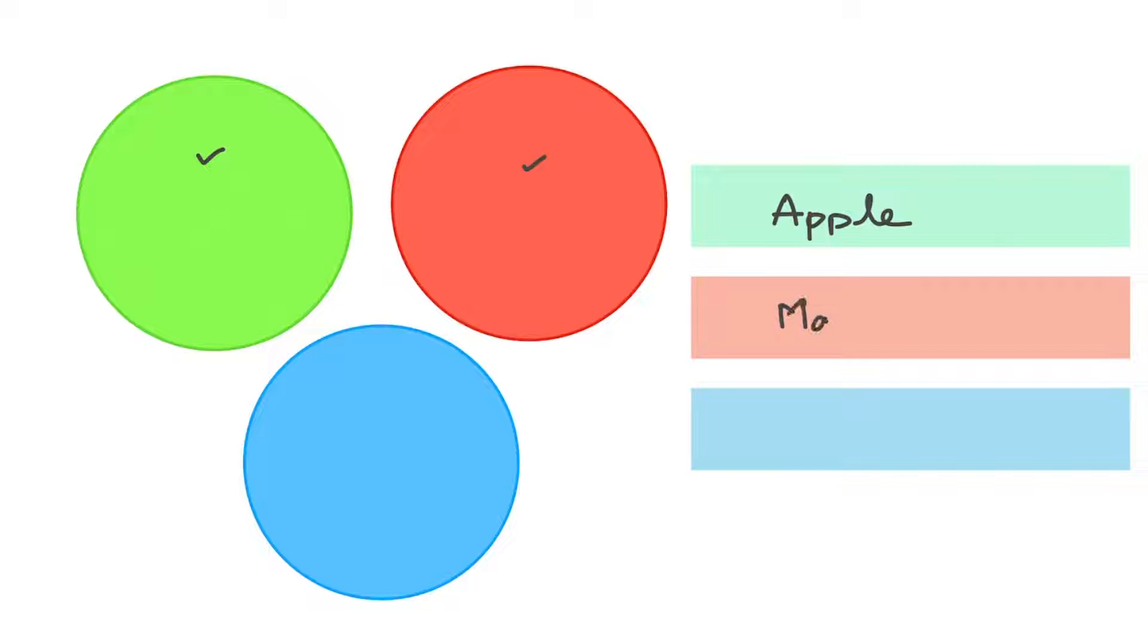I can write it as mango. Then for blue, I can write it as orange. These are three fruits with each belonging to a separate class.